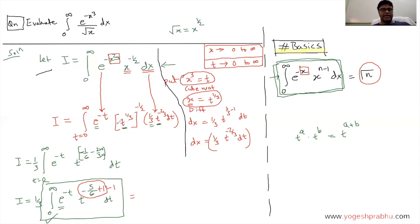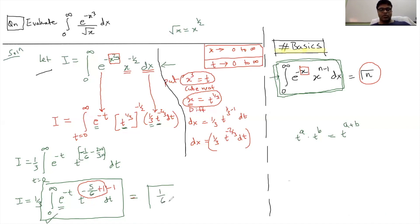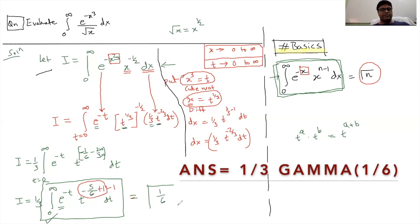So the integral I is equal to 1 by 3 times gamma of 1 by 6. Here n is 1 by 6, since minus 5 by 6 plus 1 equals 1 by 6. The value gamma of 1 by 6 cannot be simplified further, so this is the final answer to the question.